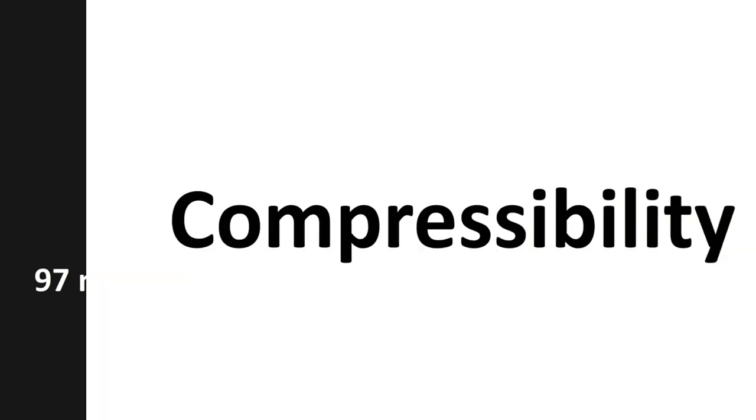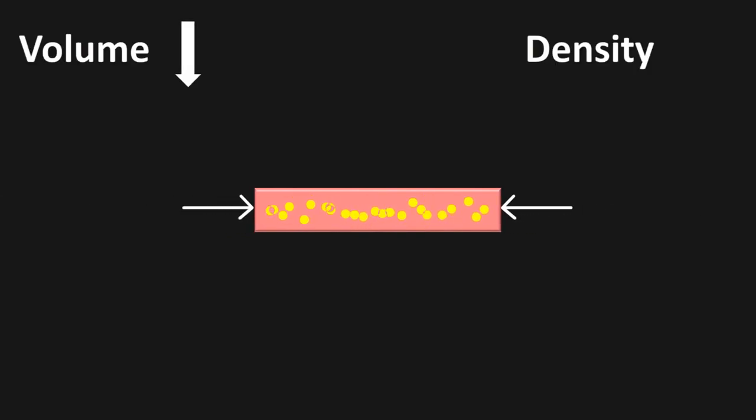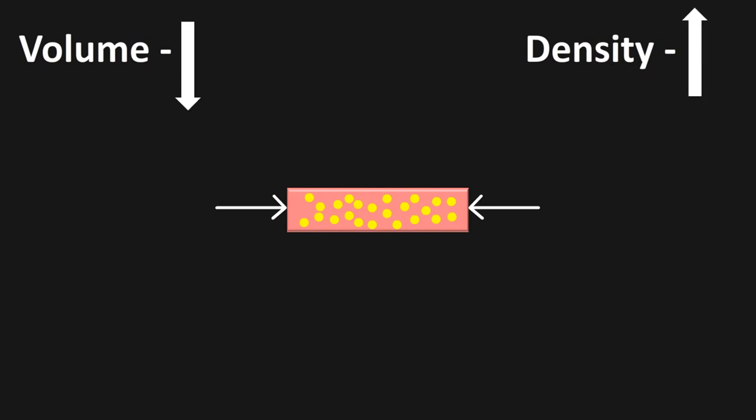First let's understand what is compressibility. Compressing something means applying pressure to reduce the volume, so that the density of the material increases, bringing the molecules even closer to each other.